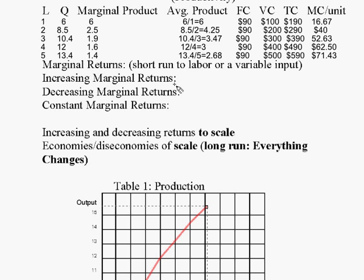Marginal returns, you're holding everything constant except for one thing. You're adding another worker, adding another worker. But returns to scale, you are changing everything at once.